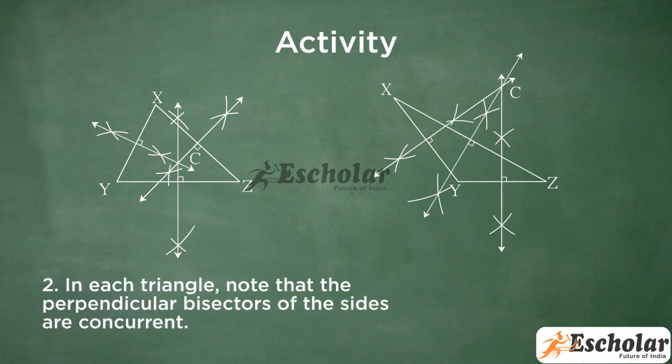Second, in each triangle, note that the perpendicular bisectors of the sides are concurrent. The location of the point of concurrence of the perpendicular bisectors is inside the triangle.